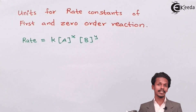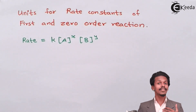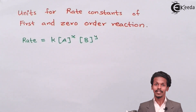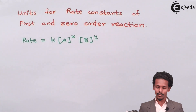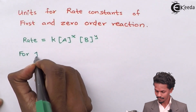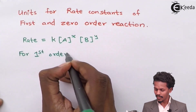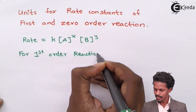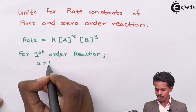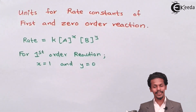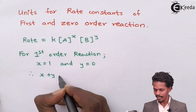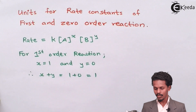For a first-order reaction, the value of x could be 1 and y could be 0, or x could be 0 and y could be 1, so that x plus y equals 1. For this instance, suppose I take x equal to 1 and y equal to 0, therefore the overall order of reaction is x plus y equals 1 plus 0, which is 1.